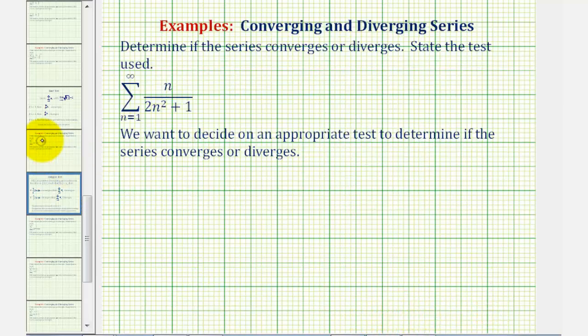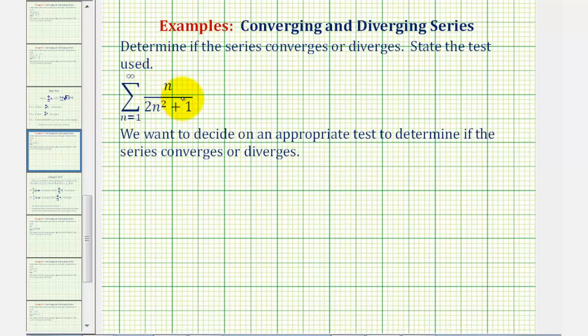Going back to our series, if this is a sub n, we need to recognize that f of x, the function we'll integrate, would have to be x divided by the quantity two x squared plus one. Let's go ahead and set up our integral. We'll have the integral from one to infinity of x divided by the quantity two x squared plus one dx.